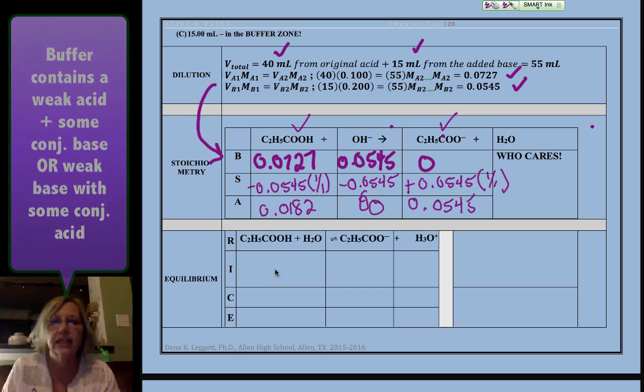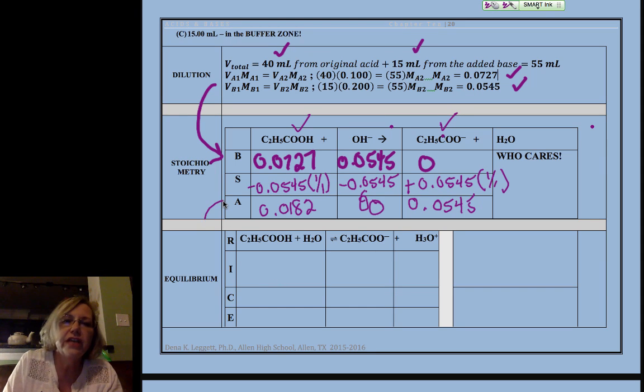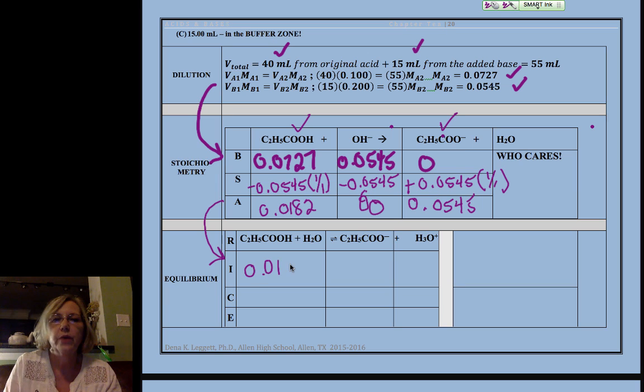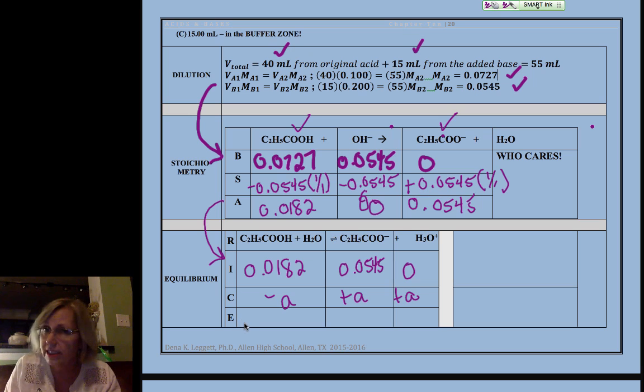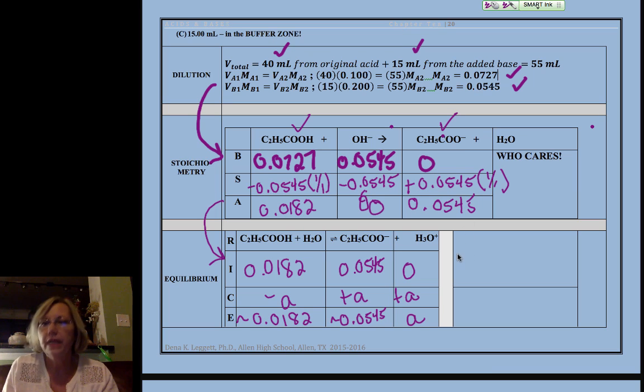Okay, so now this feeds into our initial. So that's 0.0182, 0.0545, and 0. Minus a, plus a, plus a. Remember, we neglect the addition and subtraction of an x, never the multiplication. So that's approximately 0.0182, approximately 0.0545, and then a.